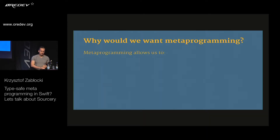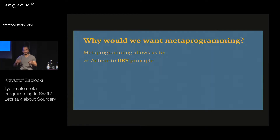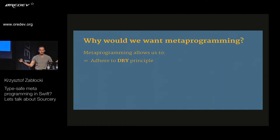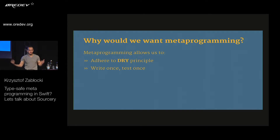With metaprogramming we can change the scenario. It allows us to adhere to the do-not-repeat-yourself principle. If we can describe the boilerplate algorithm — like for equality: for every property, see if the left and right instance values are the same, if not, it's not equal — that definition should suffice to implement it across every single type in your project for most use cases. We write it once, test it once, deal with all the special scenarios like being able to skip variables, and then it eases the maintenance cost.